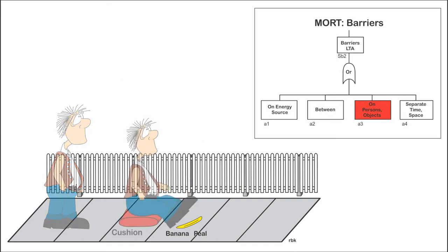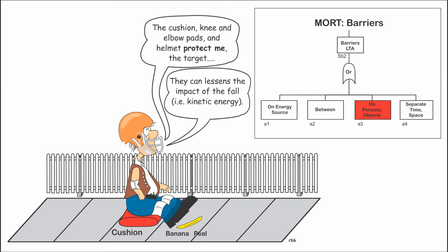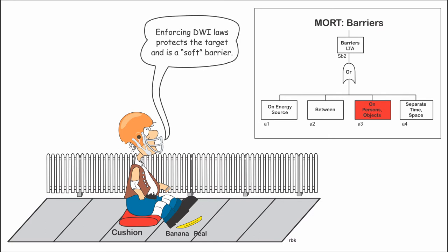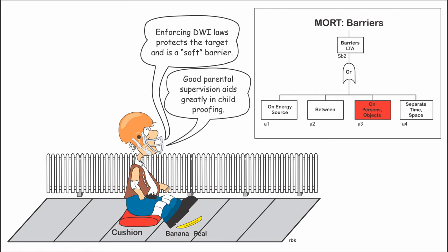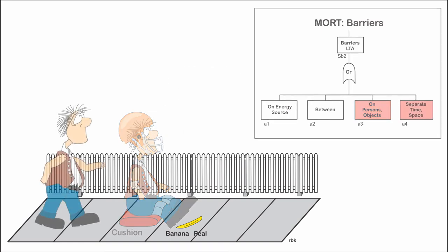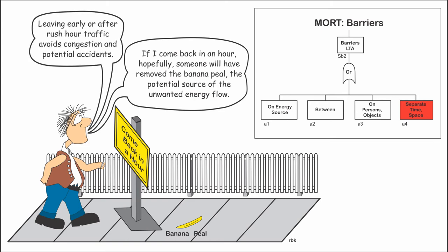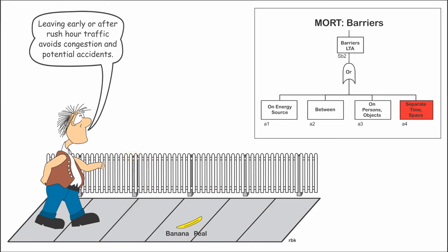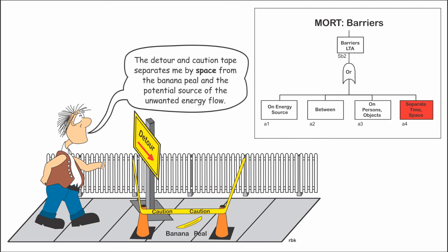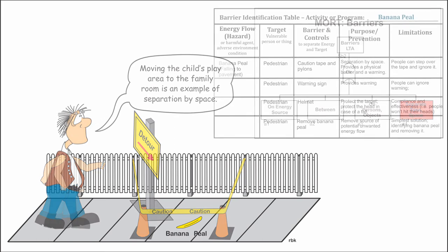Child safety latches are barriers between what is in the cabinet and the child. Barriers can also be placed on the target. Safety helmets and padding are examples. Automobile seatbelts and airbags could be considered hard barriers. Driver's education courses and enforcement of DWI laws could be considered soft barriers. Telling the child that the stove is hot, or telling them no when they attempt to open the cabinet, are examples of protecting the child. Coming back an hour later is separation by time. Avoiding rush hour driving to reduce potential accidents is another example of separation by time. A detour is an example of separation by space, and detours for highway construction are commonplace. The child playing in the family room rather than the kitchen is separation by space.